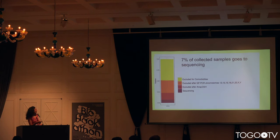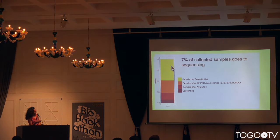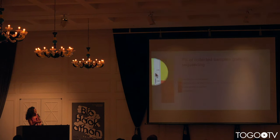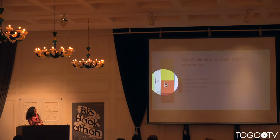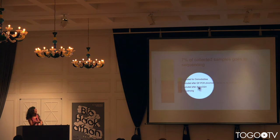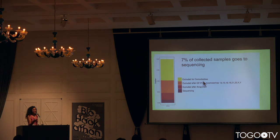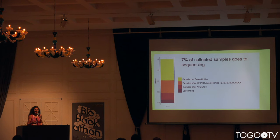The very first results: we explored a collection of about 50–60 samples, and the vast majority were excluded for comorbidities. A fraction was excluded because after screening with QF-PCR or array CGH they showed large chromosomal abnormalities. The very first result we have so far is that only 7% of the samples we collect go to sequencing. That means we need to collect a lot of samples, which is why we intend to scale the project.